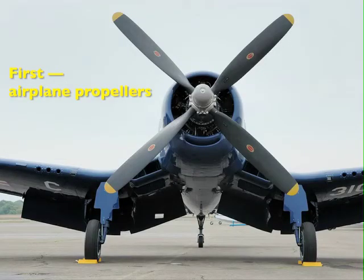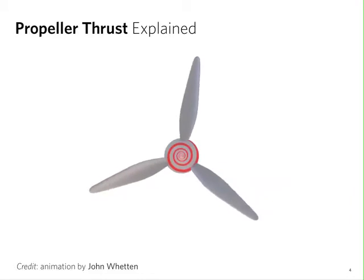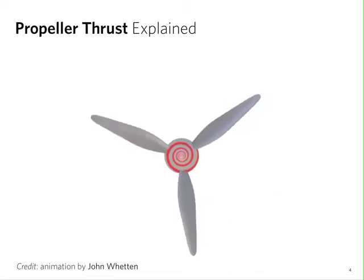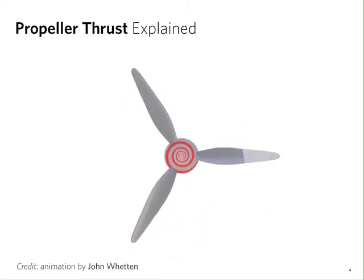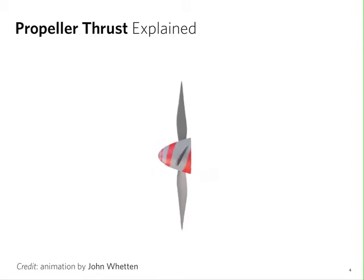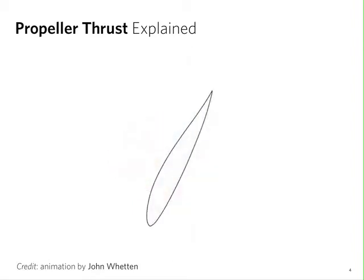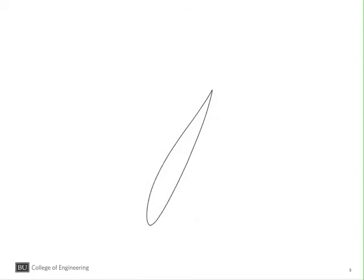To understand thrust on a flapping wing, we're going to use as a stepping stone the airplane propeller. Now consider an airplane propeller rotating as shown in the animation. Imagine we're going to look at a cross-section of one of the blades - we're going to look at it from the side as an airfoil. As such, it is moving in this case downwards.